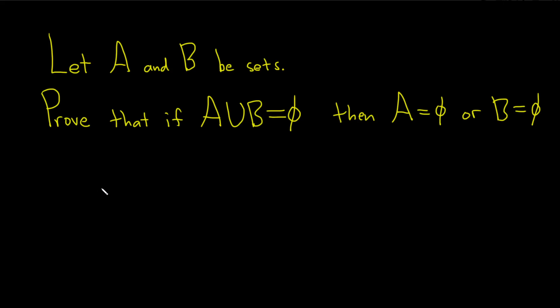Hi everyone, in this video we're going to do a set theory proof. So we have two sets A and B. We're going to prove that if A union B is the empty set, then A is empty or B is empty.